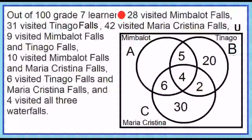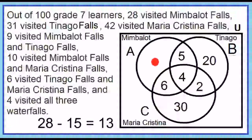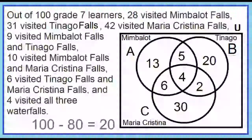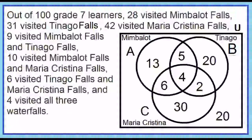42 visited Maria Christina Falls; since we already have 12 in circle C, 42 minus 12 is 30 — place 30 in circle C. 31 visited Tinago Falls; since we already have 11 in circle B, 31 minus 11 is 20 — place 20 in circle B. 38 visited Mimbalut Falls; since we already have 15 in circle A, 28 minus 15 is 13 — place 13 in circle A. Note that we have 100 Grade 7 learners. Adding all numbers: 13 + 5 + 20 + 6 + 4 + 2 + 30 equals 80; 100 minus 80 is 20 — place 20 outside the circles but inside the rectangle.